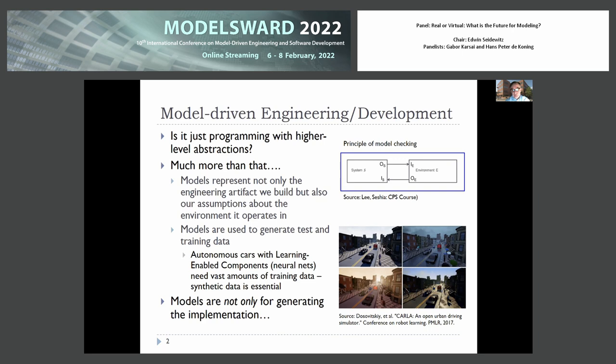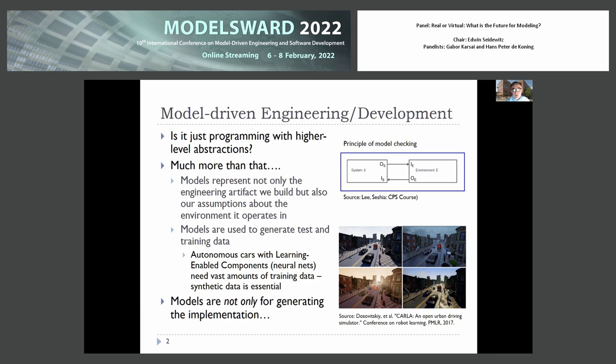One example of this is the CARLA simulation package, which generates very realistic-looking physical worlds, captures images, and uses that to train the autonomous car software — the neural networks — using this synthetic training data.